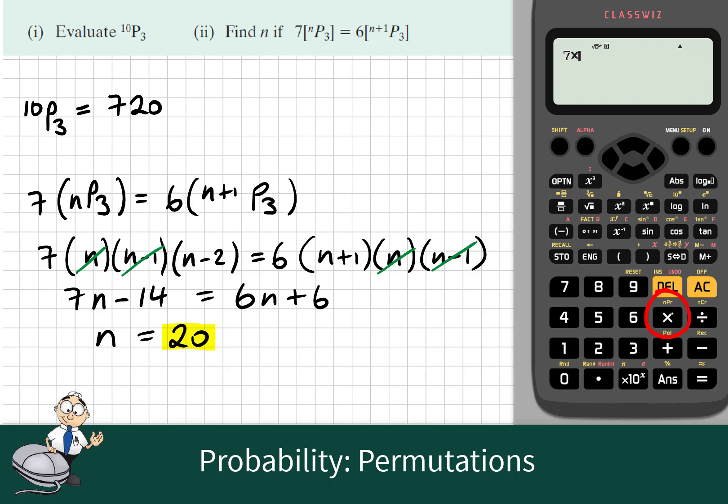It's a good idea to use the calculator to check your answer. So if we sub 20 in for n into the original formula, is 7 groups of 20P3 which is 47,880 equal to 6 groups of 21P3? And we'll see that both answers are the same.